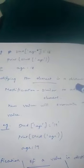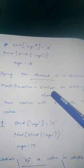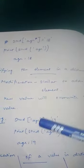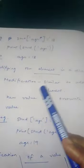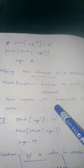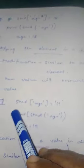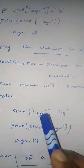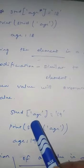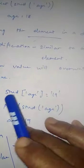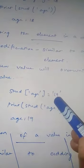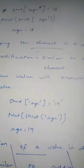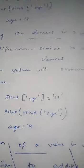Next, modifying an element in a dictionary. Modification is similar to adding. When you give a new value, it will override the old value. For example, student already has age as 18. Now to change it to 19: student['age'] = 19. So when printing print(student['age']), the updated value 19 will be printed. That is how to modify an element in a dictionary.